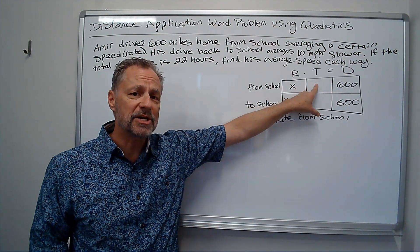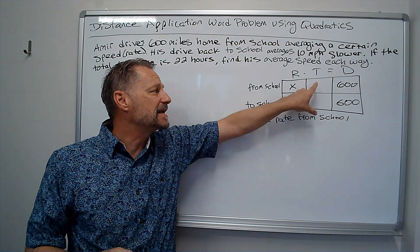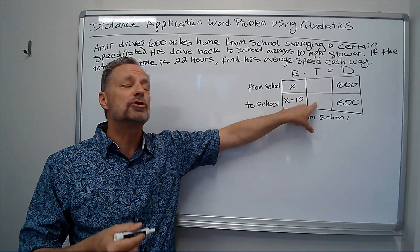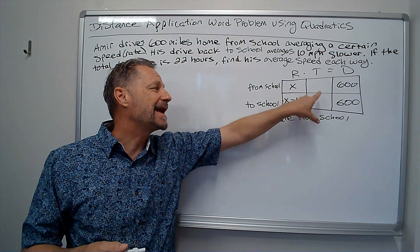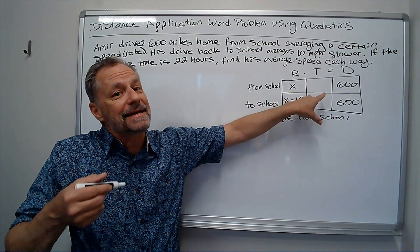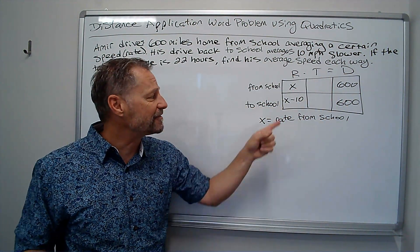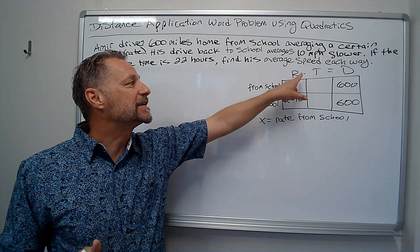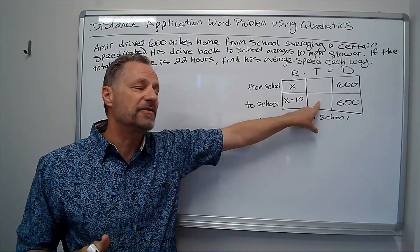And the total drive time is 22 hours. I can't put 22 hours there. I can't put 22 hours there because his time from school wasn't 22 hours. His time to school wasn't 22 hours. And we don't know it was 11 each. We know it can't be 11 each. It can't be half because he's going at a different rate.